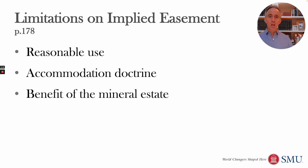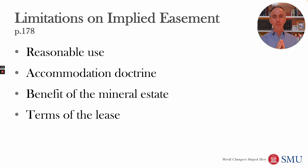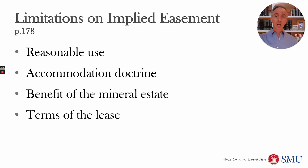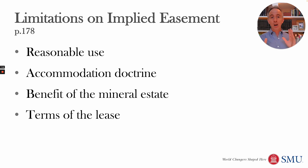The implied easement can also be limited by the terms of the lease itself. As we saw in the Lightning versus Anadarko case, the state of Texas said it didn't want drilling on its land at all. The lessee had the right to produce oil and gas but had to find a neighbor whose land could be drilled, then drill horizontally to produce oil and gas from the state's property. So you can have limitations saying the oil and gas company can only drill on certain parts of the property, can't drill on the property at all, or has to pay for damages if they drill.